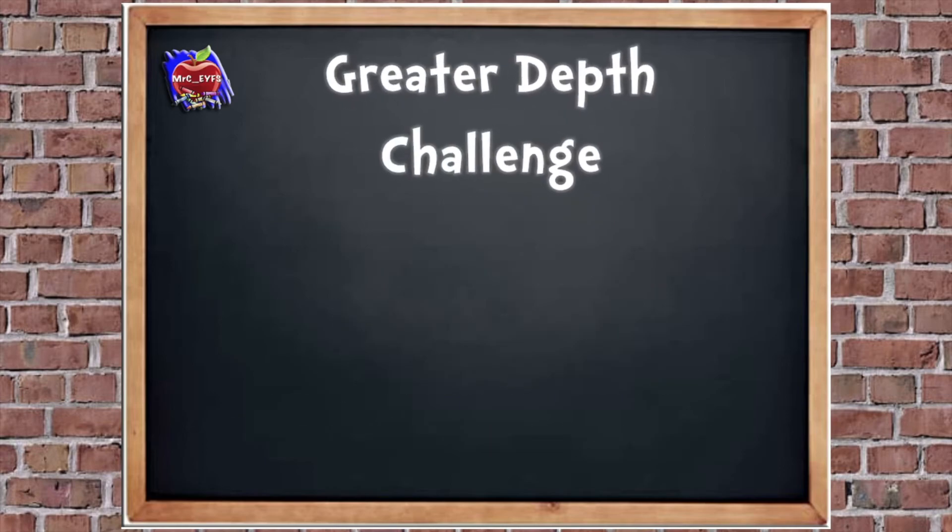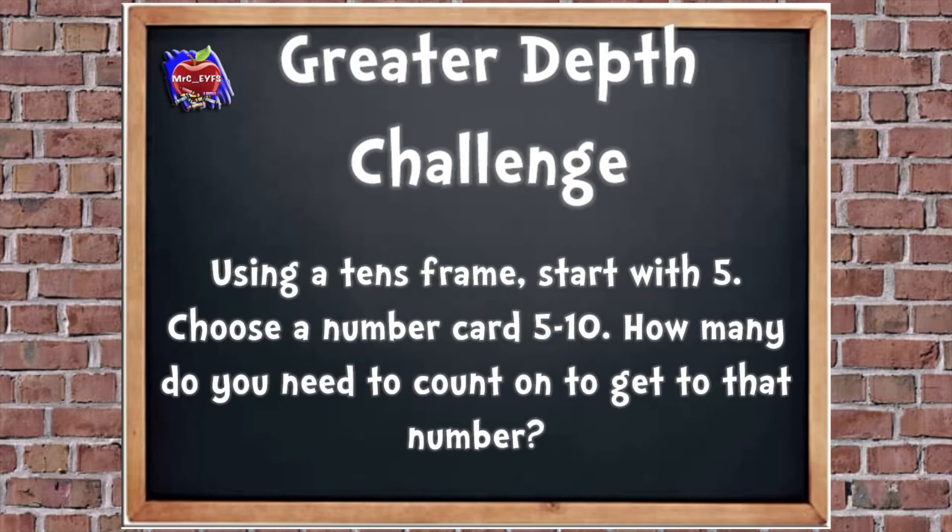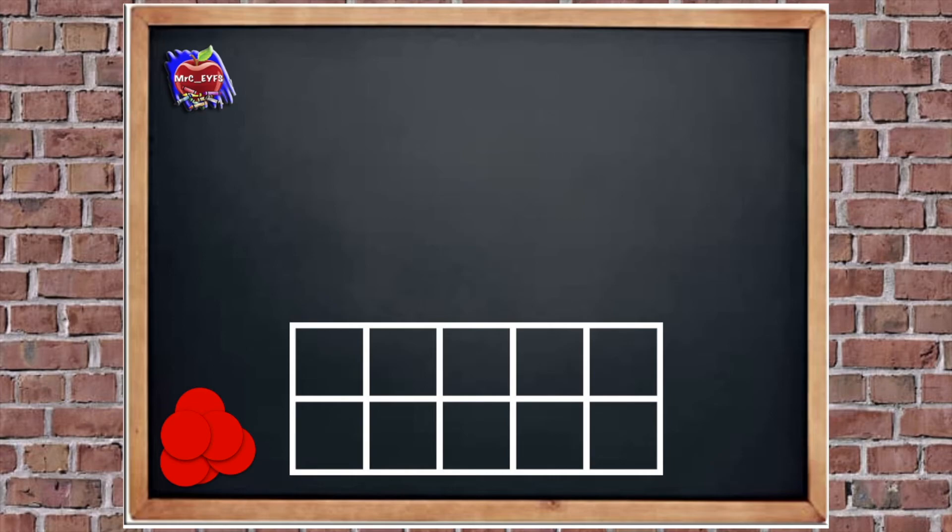Then here's your greater depth challenge. Are you ready? So, using a tens frame, start with 5. Then choose a number card from 5 to 10. How many do you need to count on to get to that number? And I'm going to give you an example now. So I'm going to show you. Are you ready? So, here's my tens frame. Oh, we've got the number 8. So, I'm going to count on from 5. So, I'm going to put 5 in there. And I need to see how many I need to get to 8. So, we've got 5. How many more do I need to put in? So, let's check. So, we're going to go 5, 6, 7, 8. How many more counters did I put in my frame? Yeah, I put 3 more in. Alright. Good job.